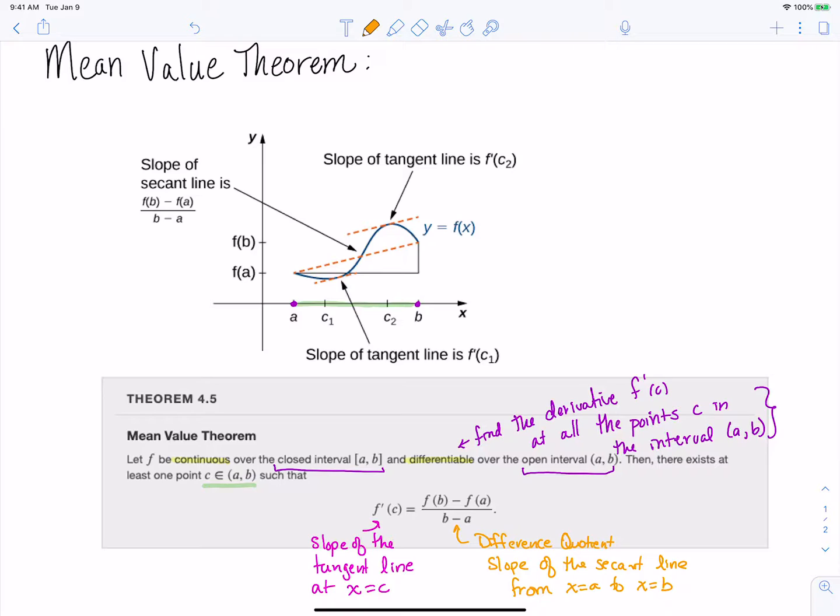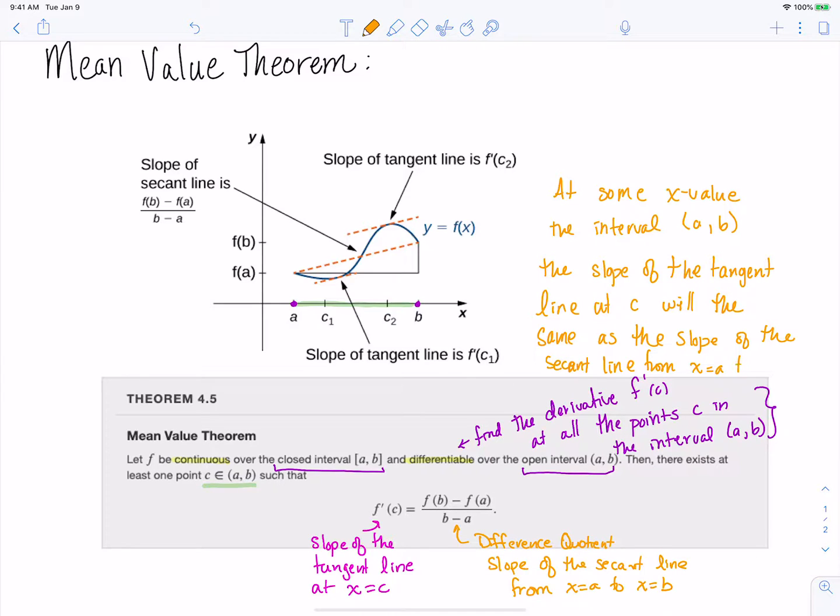So what the mean value theorem is actually telling us is that at some point in the interval, and maybe I'm going to say that a slightly different way, at some x value in the interval (a, b), the slope of the tangent line at c will be the same as the slope of the secant line from x equals a to x equals b.